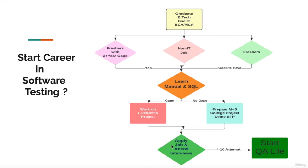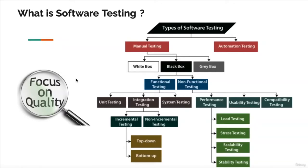Apply to small companies where skill set matters more than gaps, or consult with different consultancies — they can provide jobs through third-party companies. Once well prepared with SQL, manual testing, and a project, you can definitely apply and after 4 to 10 attempts, based on your preparation, you will get a job and start your QA career. I'll guide you on how to prepare, which course to pick, and how to start.